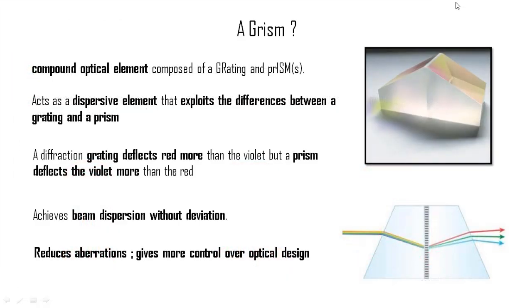Let's talk about something very exciting, a grism. As the name suggests, it's a compound optical element that is made up of a grating and one or more prism. This assembly acts as a dispersive element by exploiting both the properties of a grating and a prism.